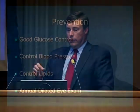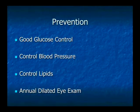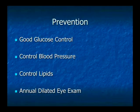For prevention of diabetic eye disease: good glucose control is a must, control the blood pressure, control the lipids — the cholesterol and triglycerides — and have your annual dilated eye exam. Part of good glucose control includes watching the diet, getting exercise, and for people who are overweight, losing weight. That all goes into glucose control in addition to medications if a primary care doctor feels that's necessary.